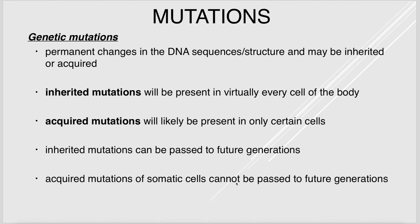Mutations are permanent changes in the DNA sequence or structure, and they can be inherited. Inherited mutations are present in pretty much all cells because they are germline mutations. Acquired mutations are only present in certain cells — for example, melanoma cells have acquired mutations, but you can't pass melanoma to someone else. Inherited mutations can be passed to future generations; acquired mutations cannot.